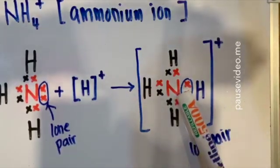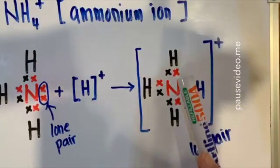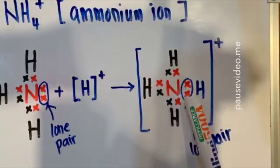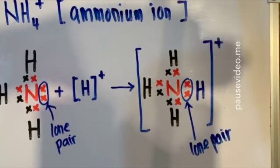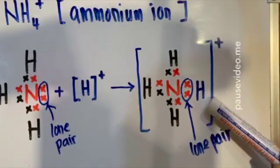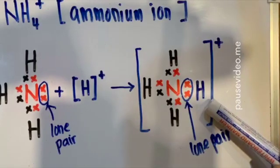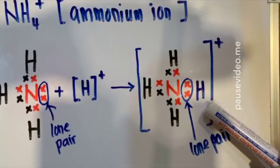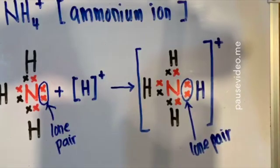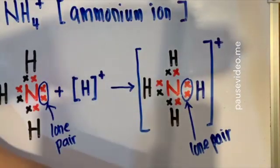Nitrogen atom still remains octet. Counting the electrons around nitrogen: 1, 2, 3, 4, 5, 6, 7, 8 — there are still 8 valence electrons around the nitrogen atom, so nitrogen achieves the most stable octet electron arrangement. For the hydrogen ion, it initially had no valence electrons in its valence electron shell. However, when it shares electrons with the ammonia molecule, it achieves the most stable duplet electron arrangement.